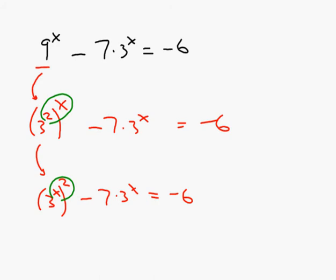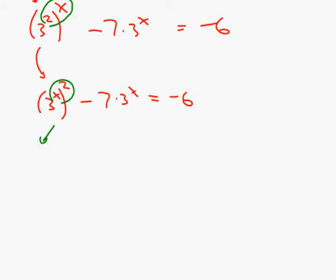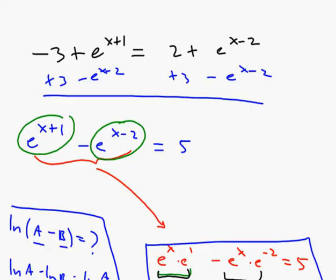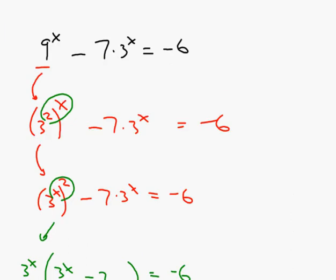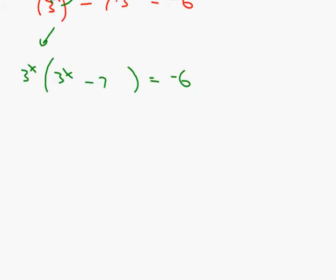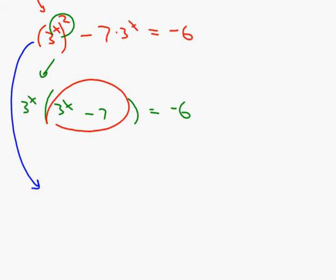Here's where the problem occurs. We hoped for a common factor, so let's take out 3 to the x: 3 to the x times (3 to the x minus 7) equals negative 6. Unfortunately, unlike the last problem where we factored out e to the x and the remaining expression was just a number, here the remaining expression still has an x in it. If I divide by it, I'll have x on both sides — not what I want. So this is a dead end.